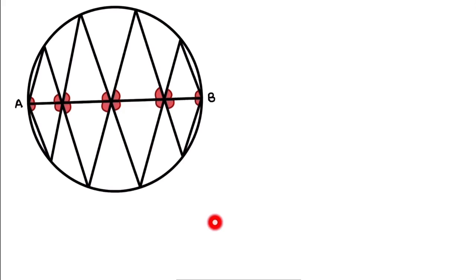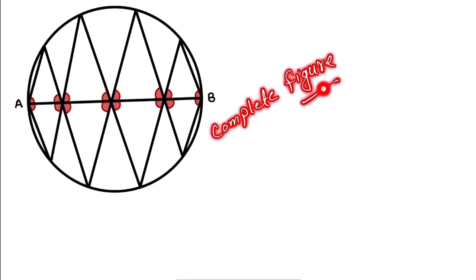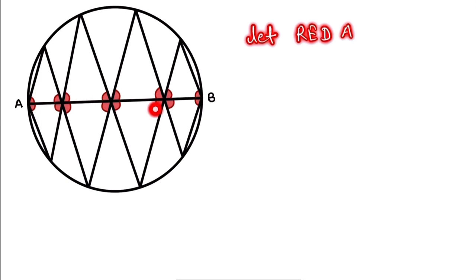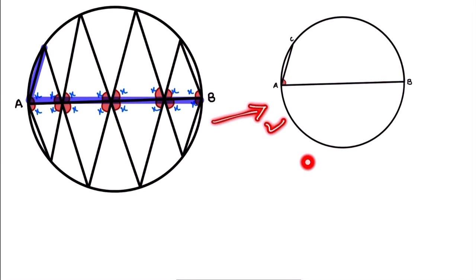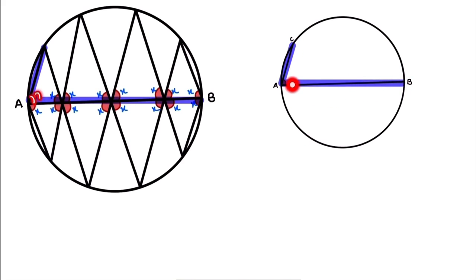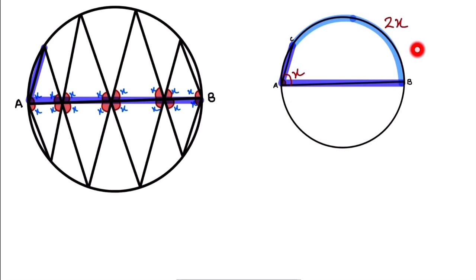Let's complete this figure. When we complete it, this angle and this angle are all equal — they are alternate angles. We let all red angles equal x. When we extract this part of the figure, this angle is x. By the theorem, the angle on the arc is 2x. This arc is 2x.